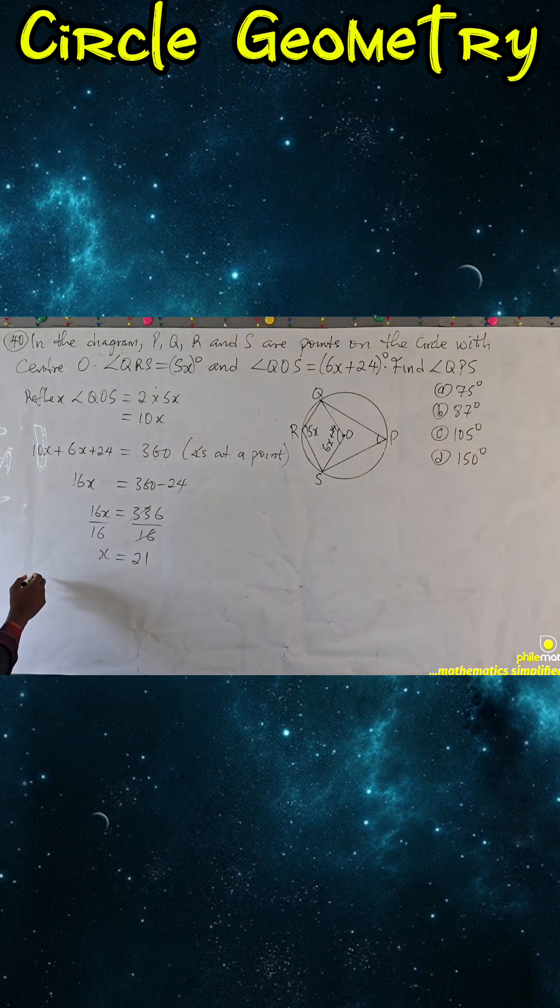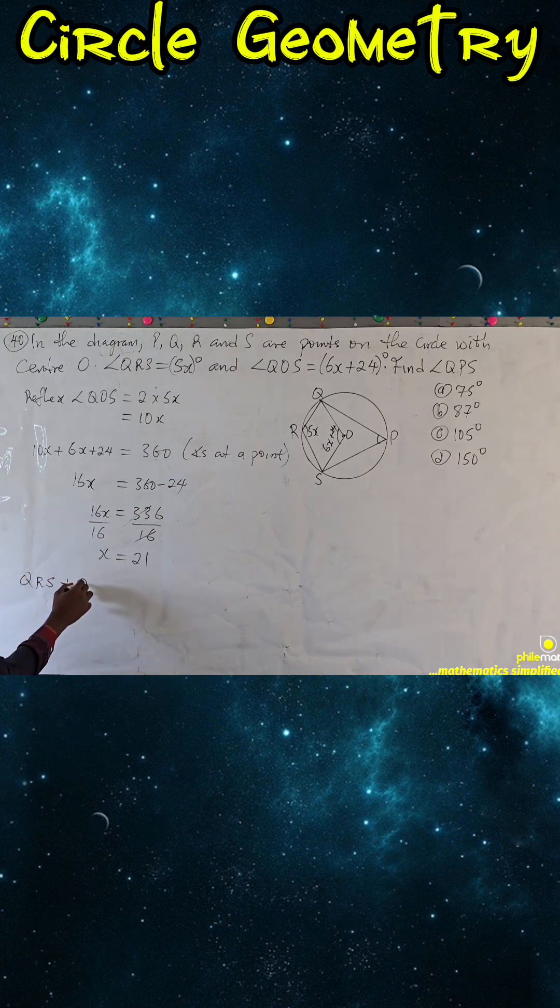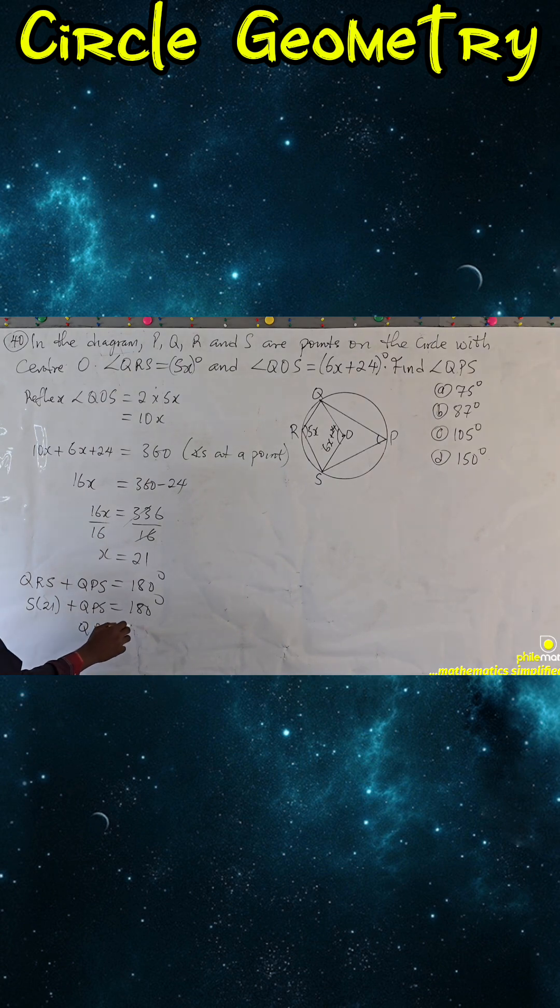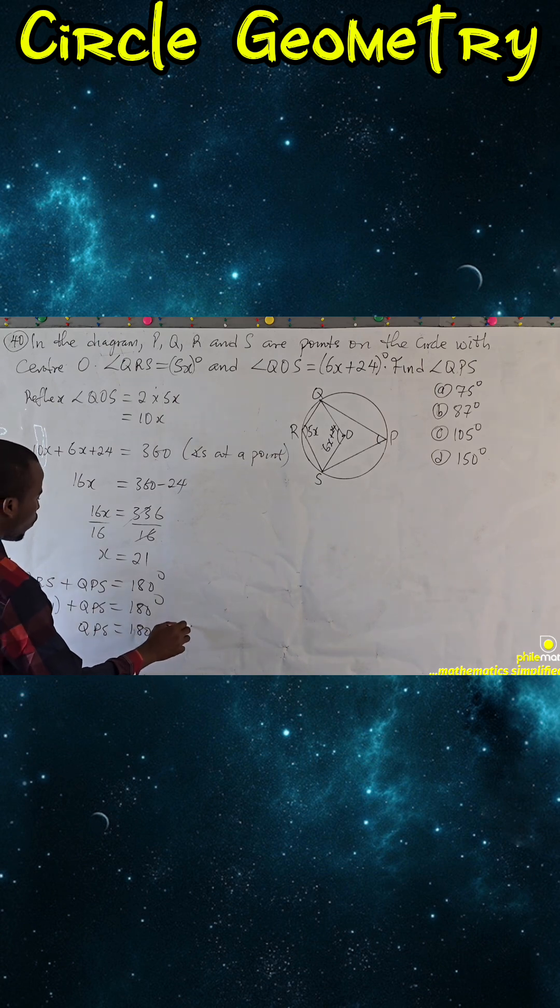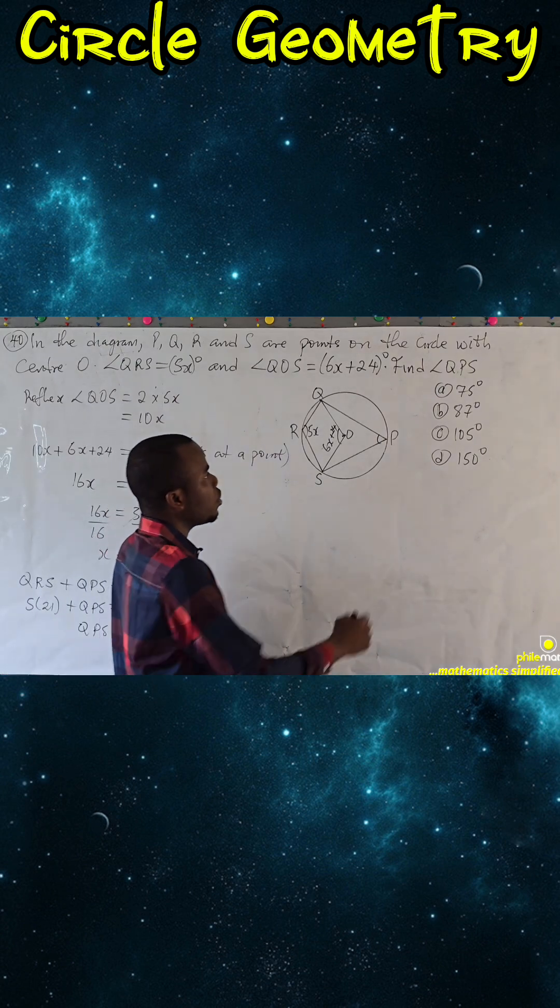So QRS plus QPS should give 180 degrees. And QRS we have gotten as 5x which is 21. QPS is what we are looking for, 180 degrees. 5 times 21 is 105. So QPS is 180 minus 105. This will give you 75 degrees and the correct option is A.